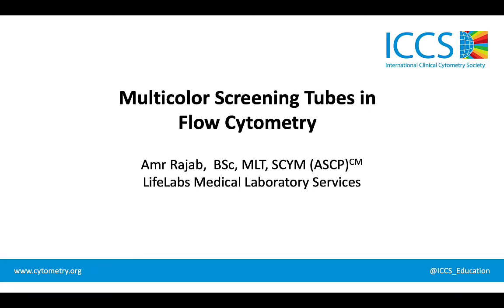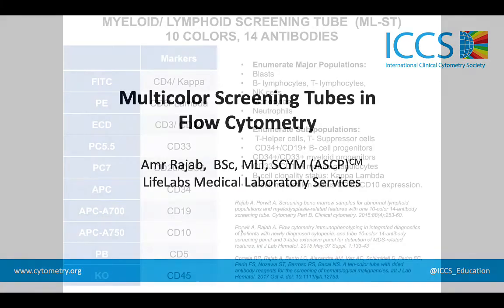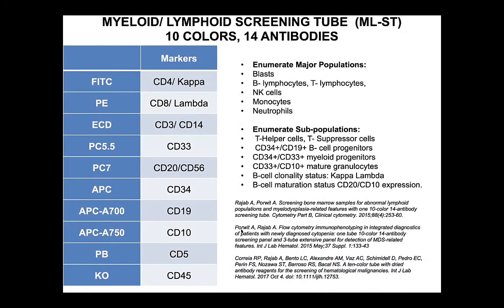This is the myeloid lymphoid screening tube. We multiplexed antibodies conjugated with the same fluorochrome. For example, CD4 and kappa, both conjugated with FITC; CD8 and lambda conjugated with PE; CD3 and CD14 conjugated with APC; CD20 and CD56, both conjugated with BV7.